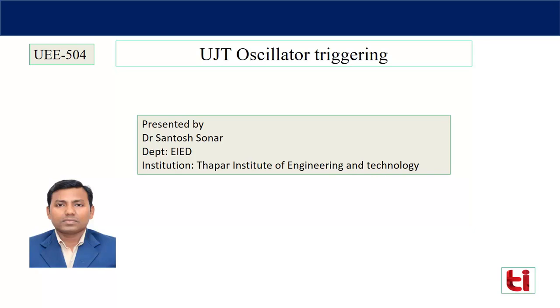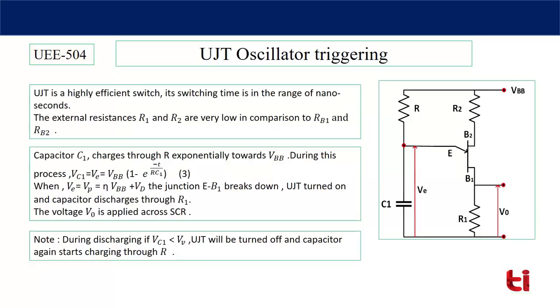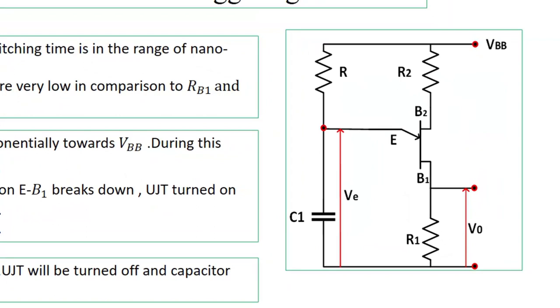SCR will be on and the negative resistance is here. In this UJT oscillator triggering circuit, you can see resistances R1, R2, R, UJT having three terminals E, B1, B2, a DC voltage VBB is applied, and the capacitor voltage will work like an emitter voltage.